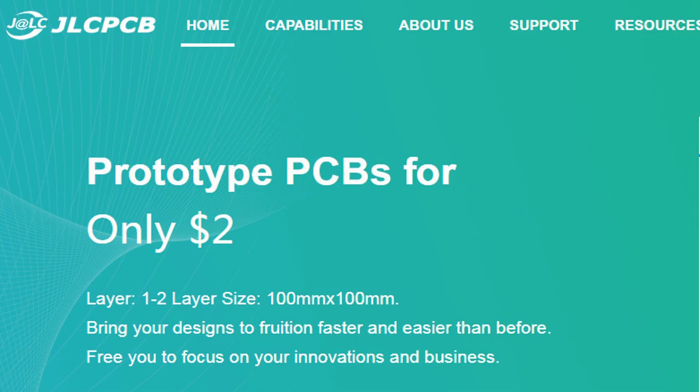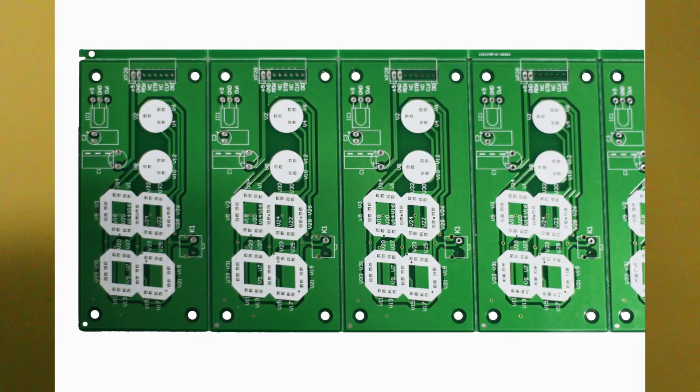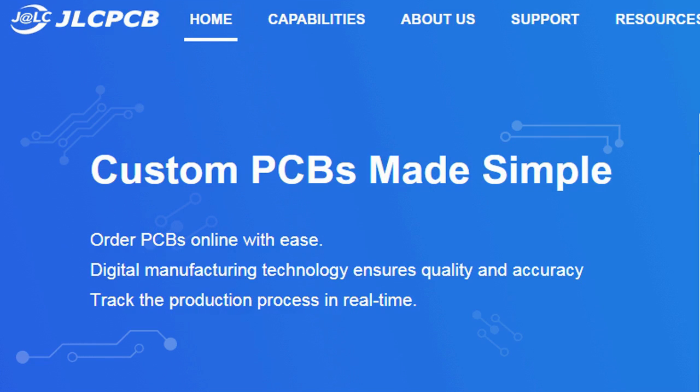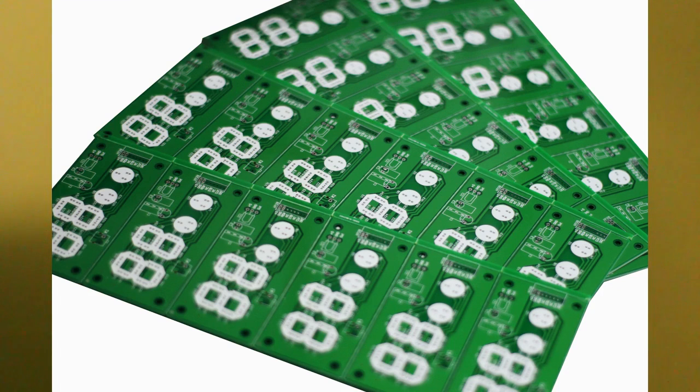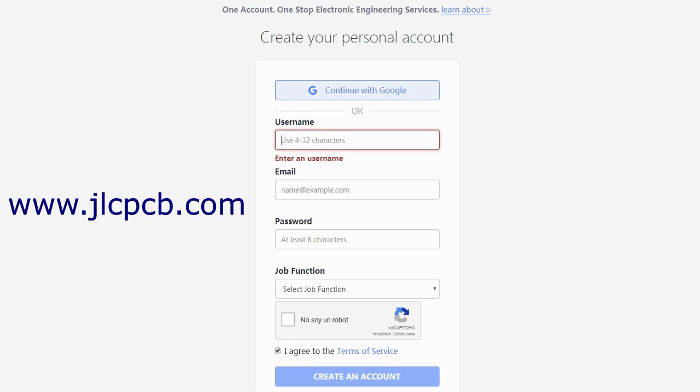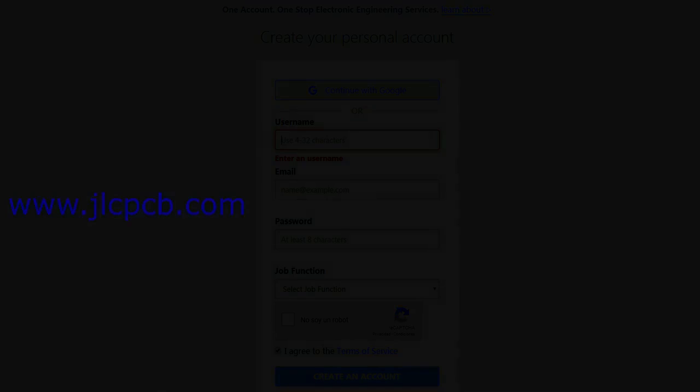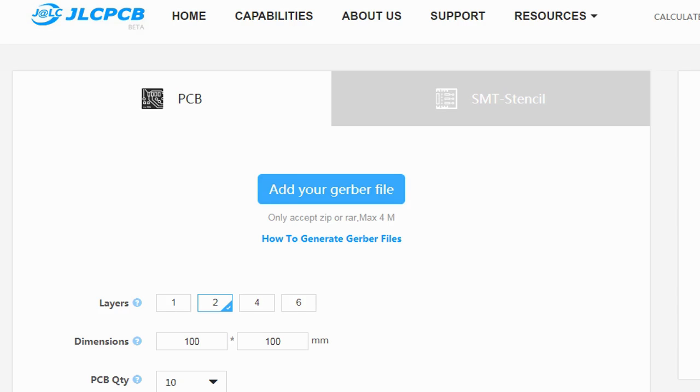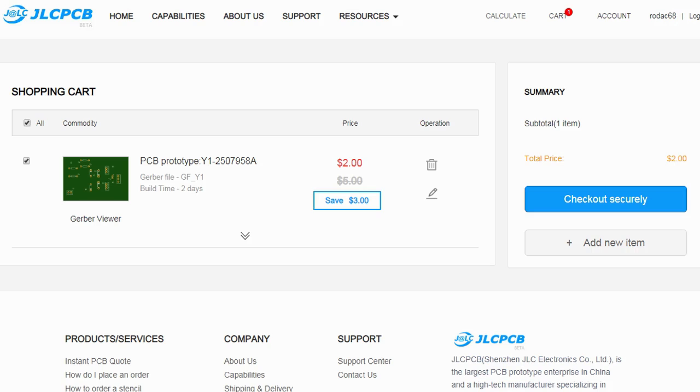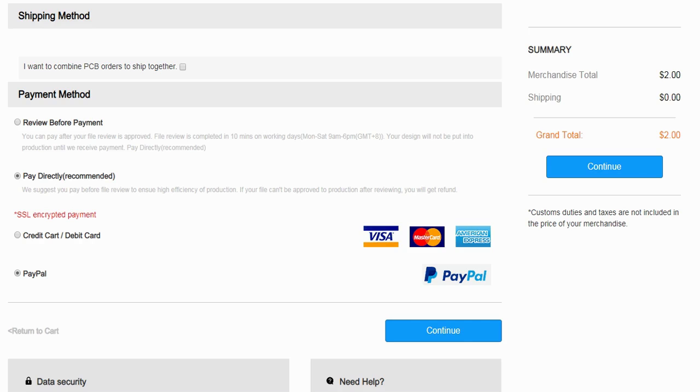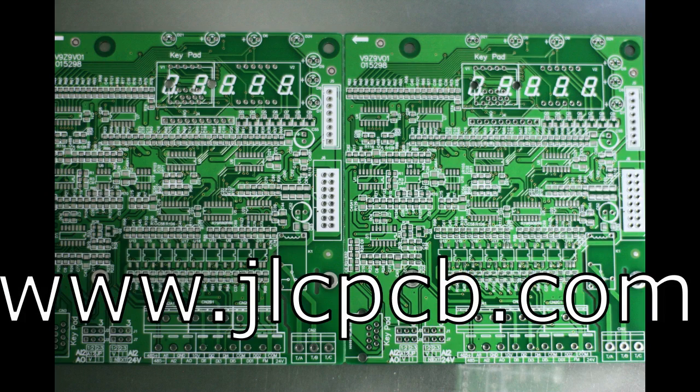This video is sponsored by JLCPCB. JLCPCB is a company that makes excellent quality PCBs at an unbeatable price. You can order boards online in minutes. After registration, upload your Gerber files, select the PCB properties, select the payment method and place your order. Best price and quality for all your PCB needs.